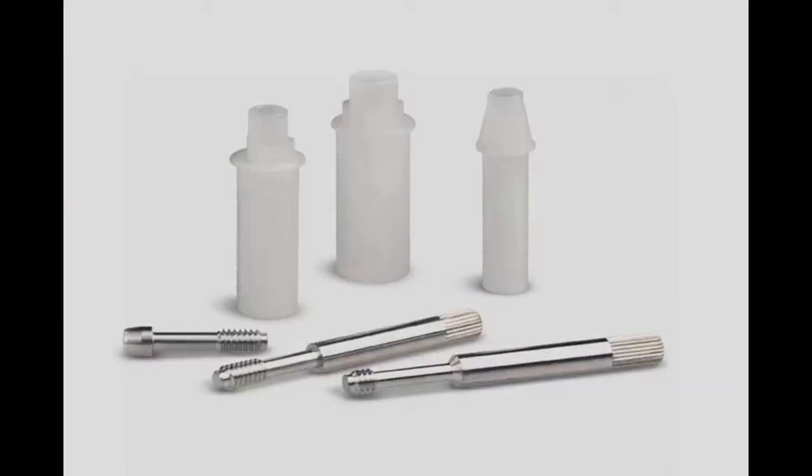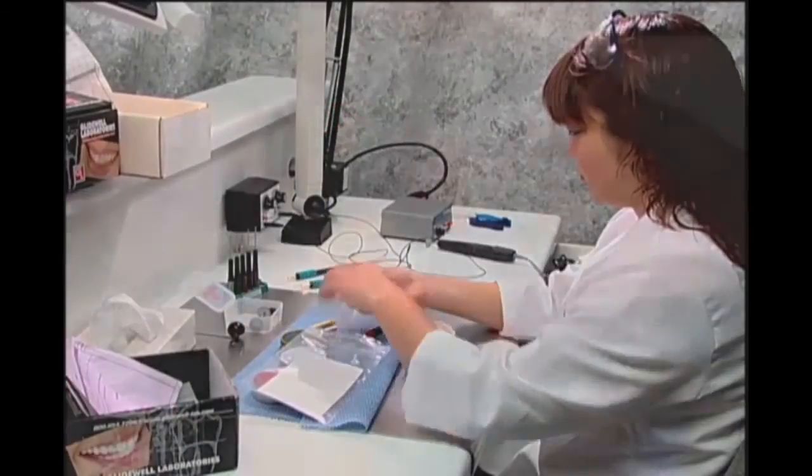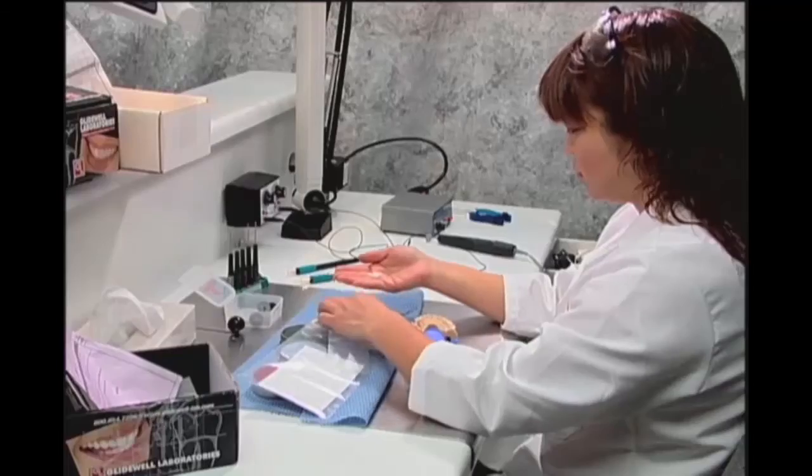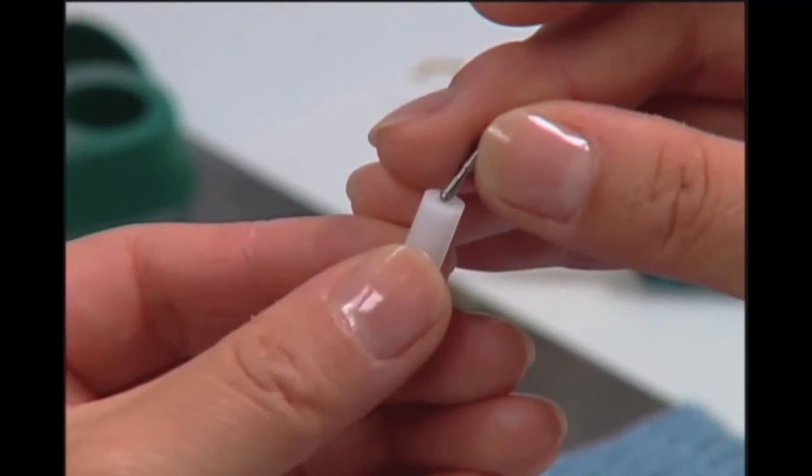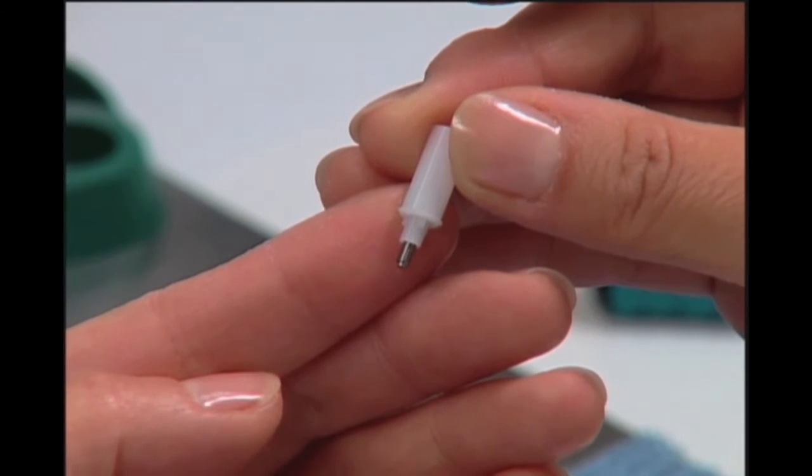To begin your abutment wax-up design session, first select the appropriate inclusive plastic waxing sleeve for the implant type and size required. Once the waxing sleeve has been removed from the package, insert the screw through the top of the sleeve so that the threaded end is emerging through the connection to the implant.